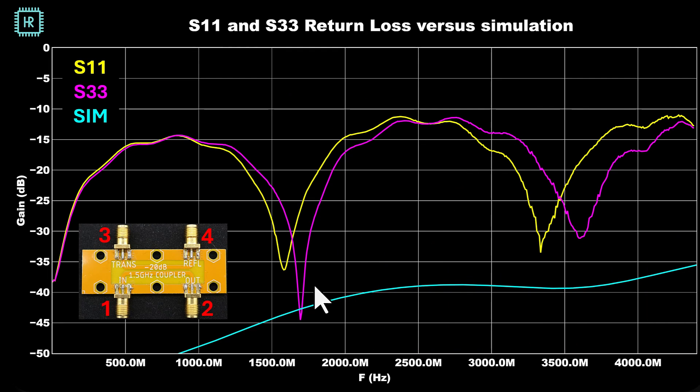Now we can also look at the matching. In an ideal simulation the matching is usually much better because in practice you never get as close to that as in reality. But we can see that at 1.5 GHz we have a 23 dB match at least which is a very good number. Very little reflection.